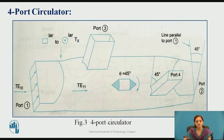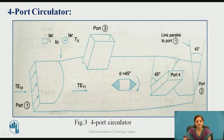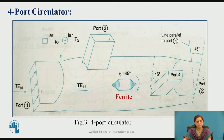Consider this 4-port circulator with ports 1, 2, 3, and 4. Whatever input is applied at port 1 is in TE10 mode. This TE10 mode signal is converted to TE11 mode because of the transmission of the signal from rectangular to circular waveguide. The transmitted signal is therefore in TE11 mode. A ferrite rod is placed at the center of the circulator. When the input is applied to port 1, the output appears at port 2 only — it does not come towards port 3 or port 4.